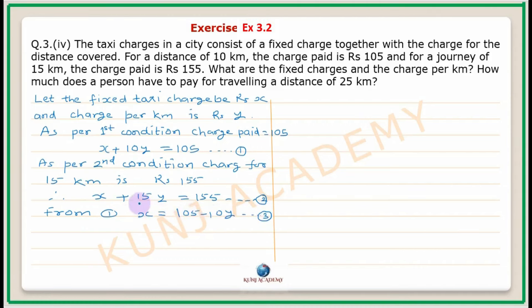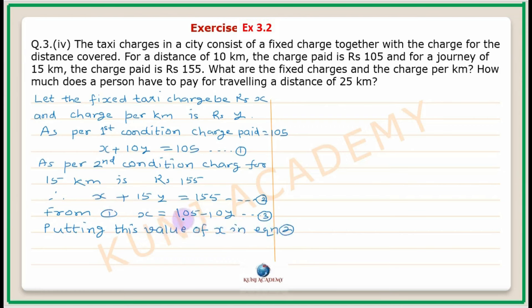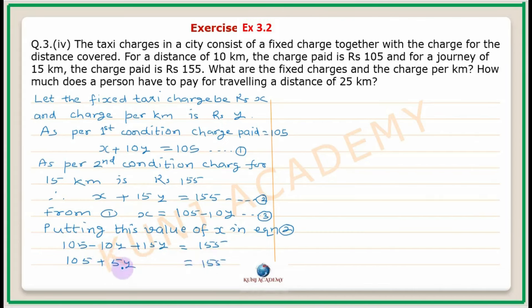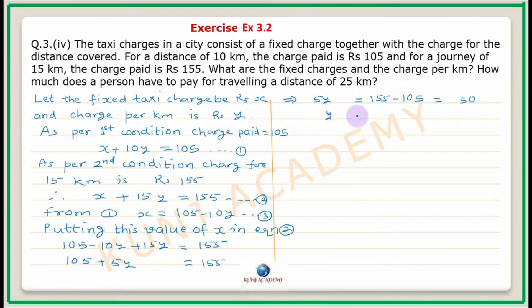Putting this value of x in equation 2: 105 minus 10y plus 15y equals 155. So 105 plus 5y equals 155, therefore 5y equals 155 minus 105, which gives 5y equals 50. So y equals 50 upon 5, equal to 10.